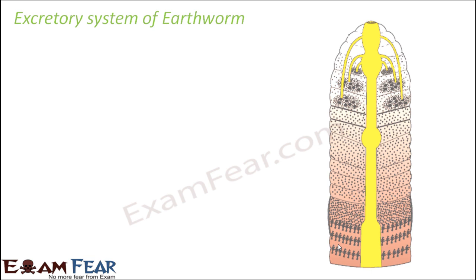By now we already saw the food habits of earthworm, how the food gets digested, how the digested food gets absorbed, and how that is circulated throughout the body with the help of blood vessels. Now after digestion there will be some amount of food which will not get digested. So what happens to that waste? It needs to be removed out of the earthworm body, and that process is nothing but excretion.